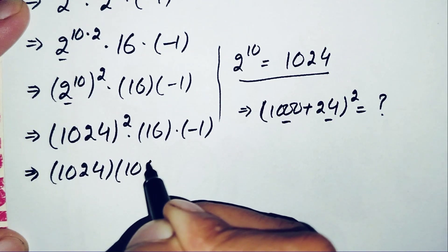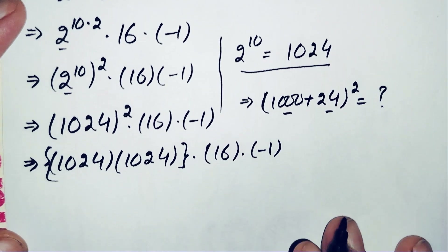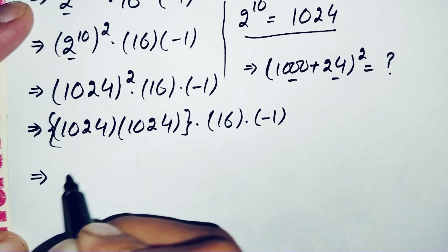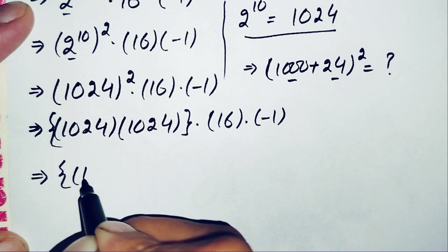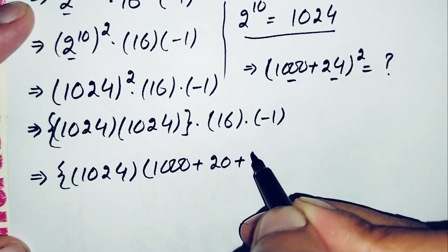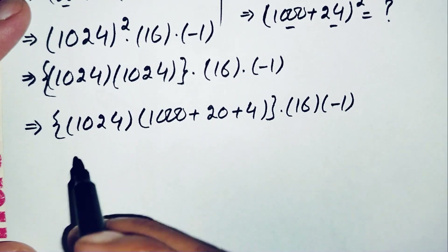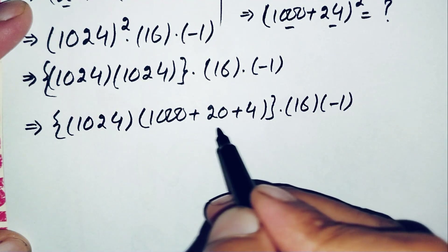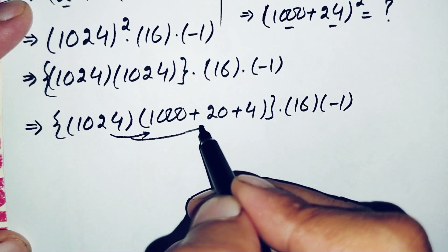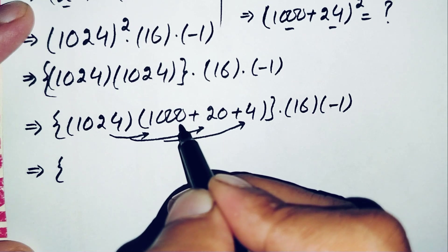We write the expression as 1024 times 1024 times 16 times negative 1. To multiply 1024 by 1024, we split the second 1024 as 1000 plus 20 plus 4. We then distribute 1024 across each of these three parts, first multiplying by 1000, then by 20, and then by 4.